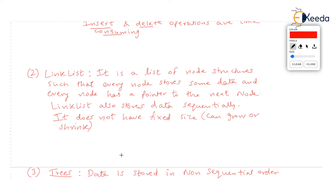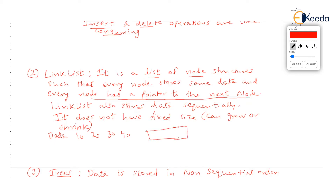The second data structure is linked list. Linked list also stores data sequentially. What is a linked list? It is a list of nodes — a node structure such that every node stores some data and every node has a pointer to the next node. Let's assume we want to store simple data: 10, 20, 30, 40. We can store this data in an array — make a simple array and store four values: 10 followed by 20 followed by 30 followed by 40, stored at indices 0, 1, 2, 3. Another way is to store 10, 20, 30, 40 in a linked list.